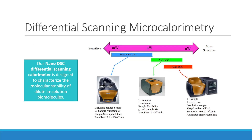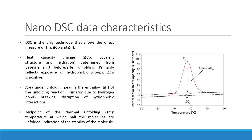Differential Scanning Microcalorimetry is a much more sensitive technique than traditional DSC. Our NanoDSC is designed to characterize the molecular stability of dilute in-solution biomolecules. DSC is the only technique that allows the direct measure of the midpoint of thermal unfolding, heat capacity change and enthalpy.